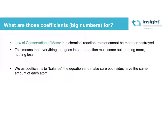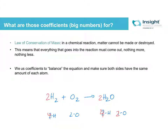So, we talked about this on the last slide. If you have this equation, before I add the coefficient, you can see that there are 2 hydrogens and 2 oxygens on the reactant side, but on the product side there are 2 hydrogens and only 1 oxygen. So to fix that, we add coefficients — that changes this to 2, this to 4, so we need a 2 over here to make that 4.